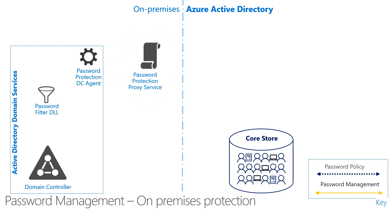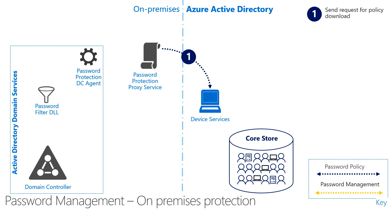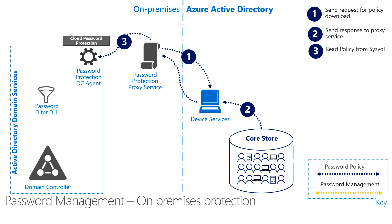In step one, when an available proxy service is found, the DC Agent sends a password policy download request to the proxy service, which in turn sends the request to the Azure AD backend service. During step two, the Azure AD backend service retrieves the policy from the core store and then returns the response. In step three, after the DC Agent Service receives a new password policy from Azure AD, the service stores the policy in a dedicated folder at the root of its domain Sysvol folder share. The DC Agent Service checks the age of the currently locally available policy every hour. If the policy is older than one hour, the DC Agent will request a new policy from Azure AD via the proxy service. If the current policy is not older than one hour, then the DC Agent will continue to use that policy.